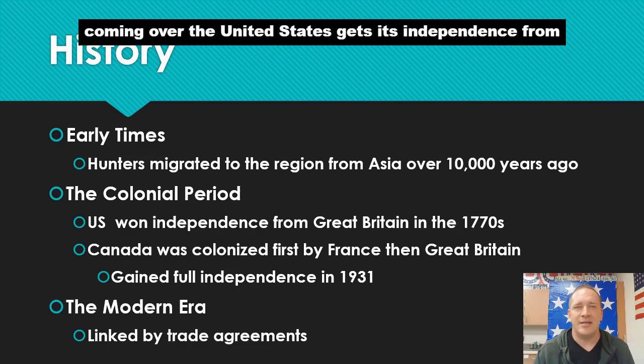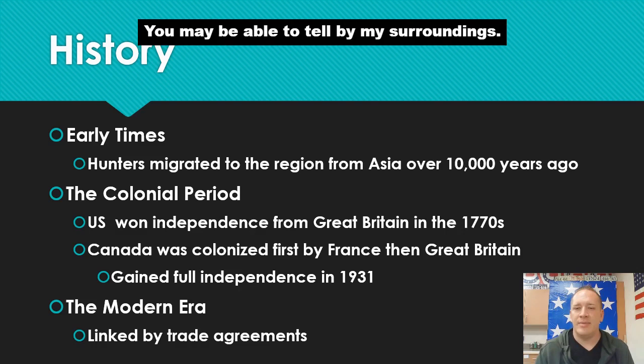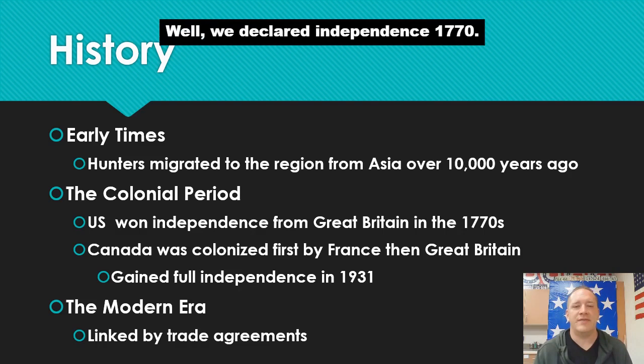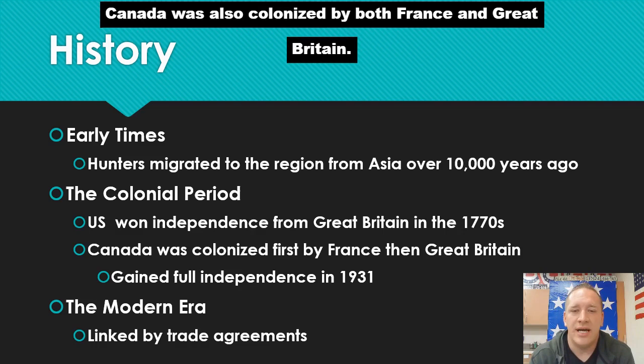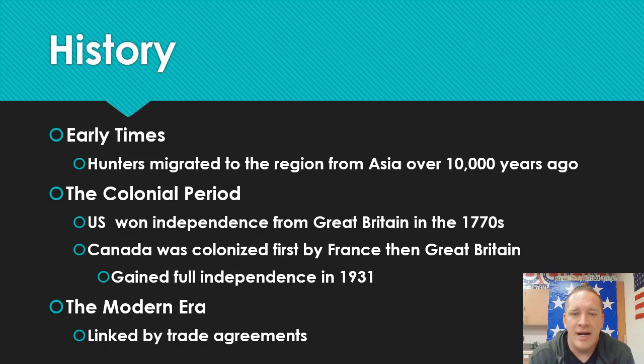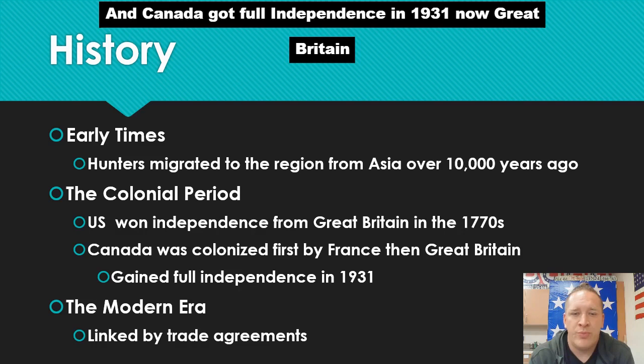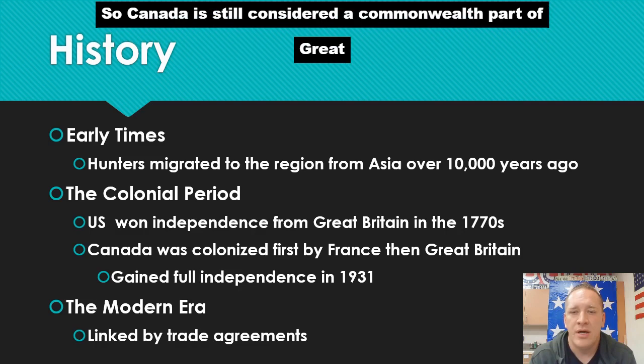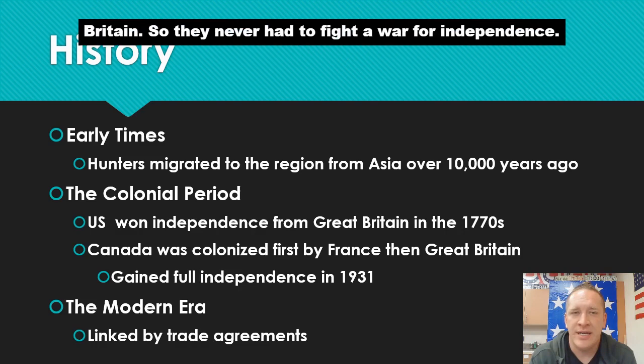Moving to the colonial period — we get a bunch of Europeans coming over. The United States gets its independence from Great Britain in the 1770s — 1776 to be exact, that's when we declared independence. Canada was also colonized by both France and Great Britain. Canada got full independence in 1931. Great Britain had learned its lesson from its dealings with the United States, so Canada is still considered a commonwealth part of Great Britain — they never had to fight a war for independence; they were just given it.